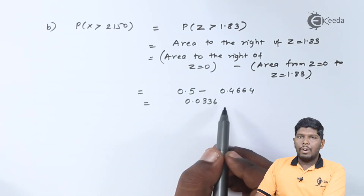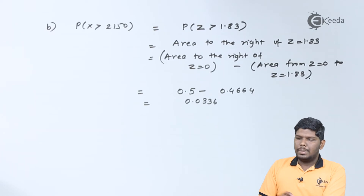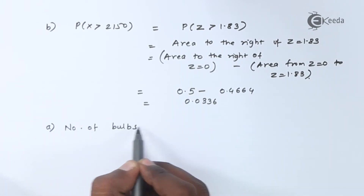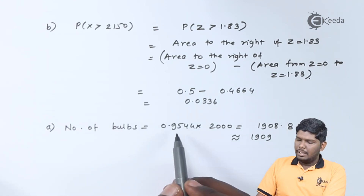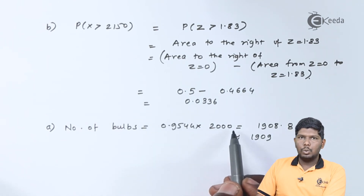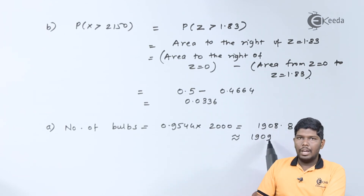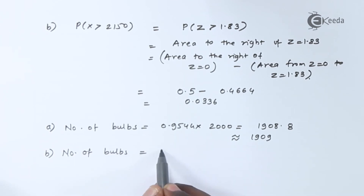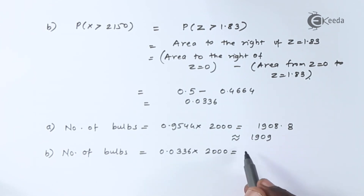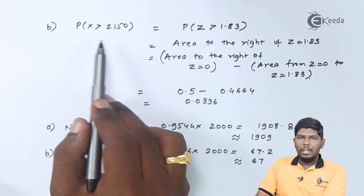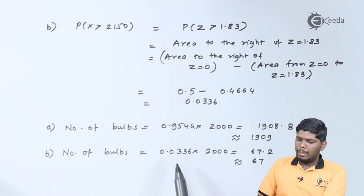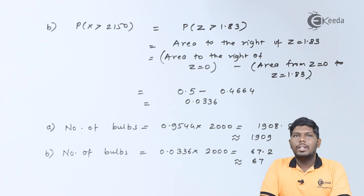Now that we have found the probabilities for both parts, to convert them into the number of bulbs we multiply by 2000, since the test is carried out on 2000 bulbs. For the first case, 0.9544 × 2000 = 1908.8, approximately 1909 bulbs burning between the given hours. In the second case, 0.0336 × 2000 = 67 bulbs working over 2150 hours. I hope friends you have understood this problem, thank you for watching.